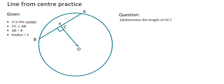In this question we are given that O is the center of the circle. OC is perpendicular to AB so we can see that there's a 90 degree angle there. The length of AB is 8 and the radius of the circle is 5. We can't see that on the diagram but that's important.